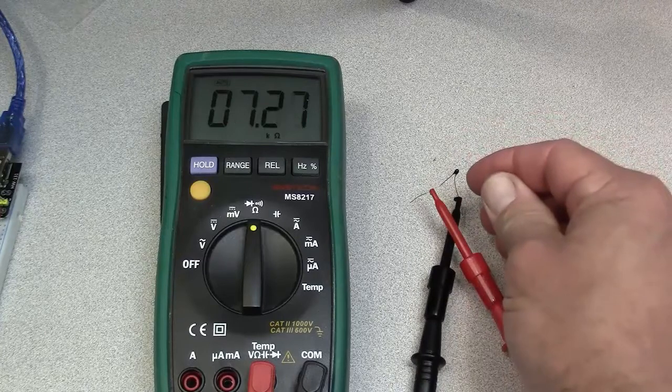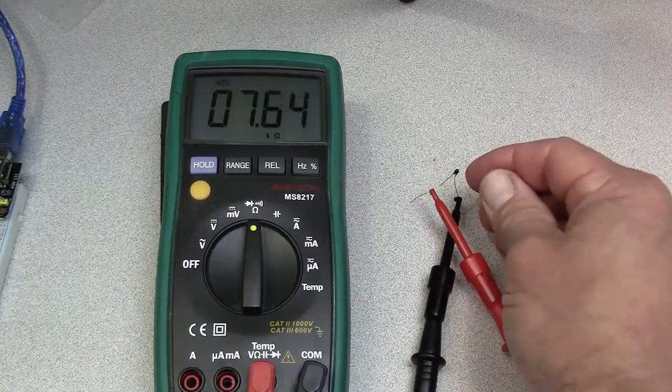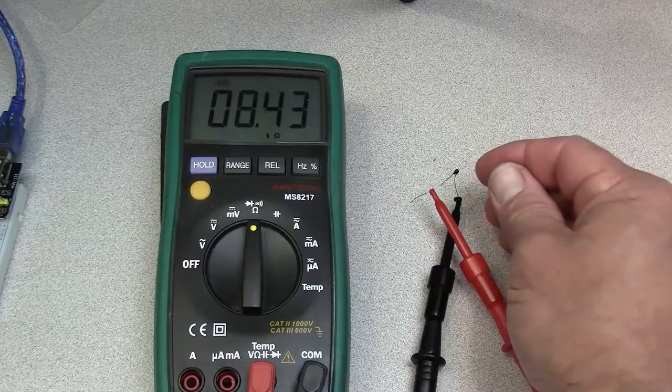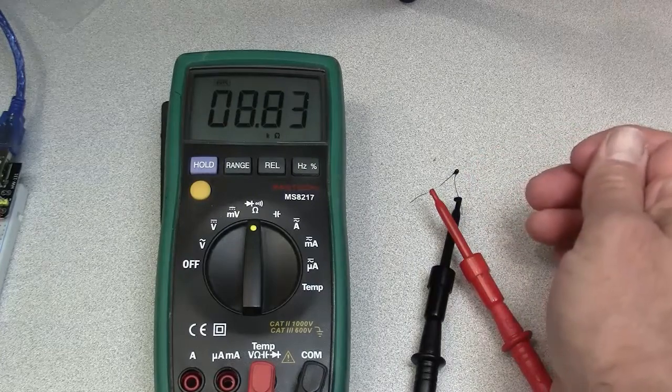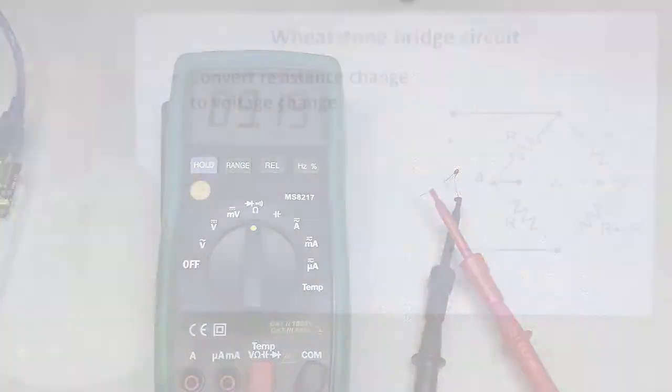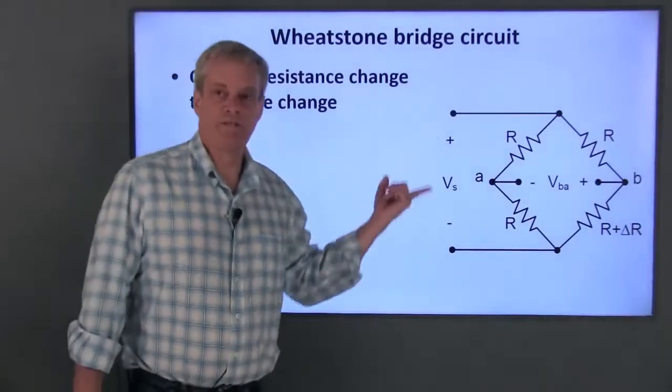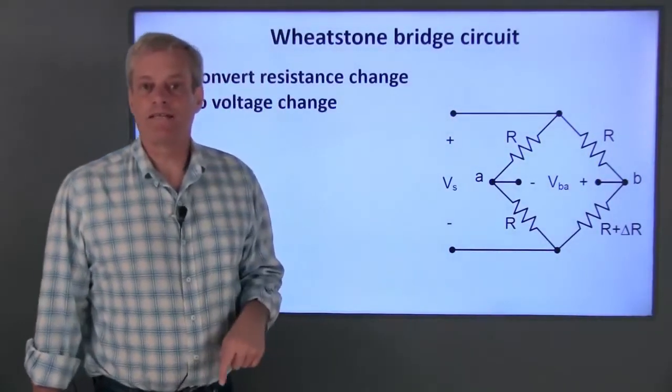In order to convert this resistance change to a voltage change, we'll use what is called a Wheatstone Bridge. This is a basic Wheatstone Bridge circuit. The circuit has a fixed voltage, V sub S, applied to it across these terminals.